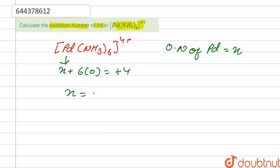If we solve this, we get the value of x is 4. That means the oxidation number of Pd is +4. In the question, we have to find out the oxidation number of Pd in the compound, so the oxidation number of Pd in this compound is +4.